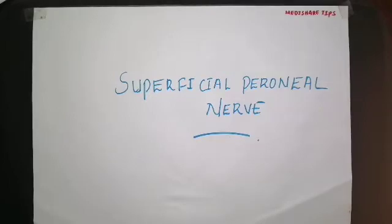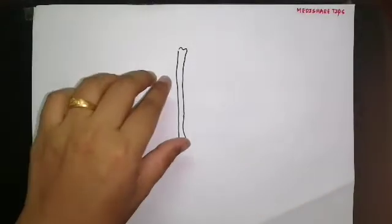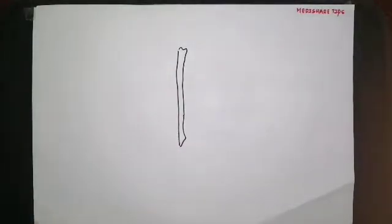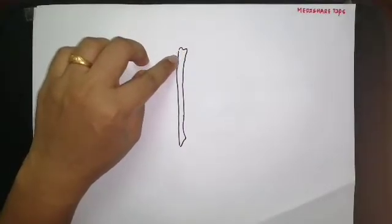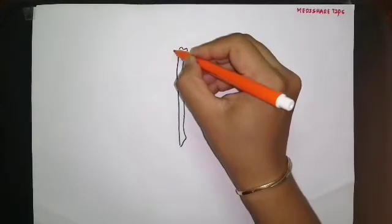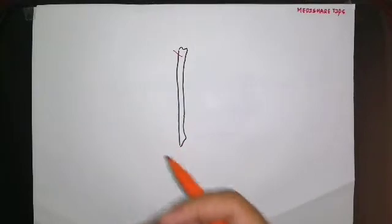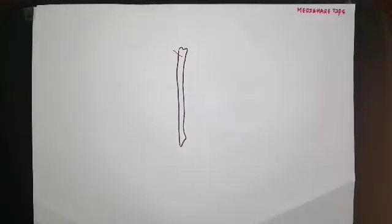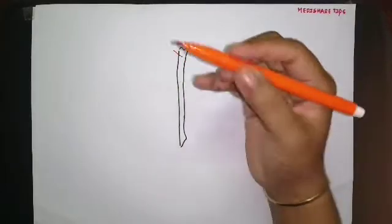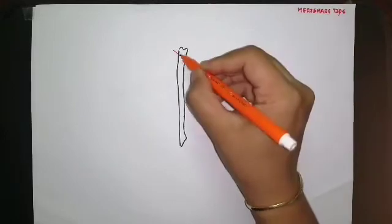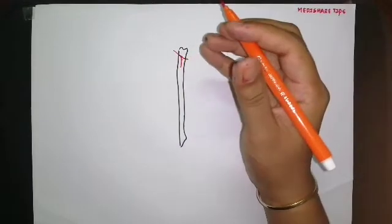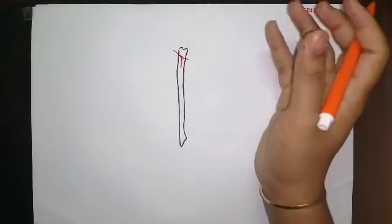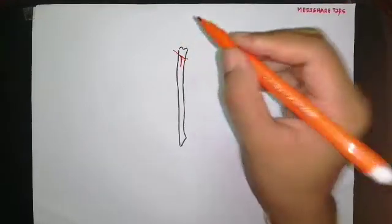In this video we are going to discuss about the superficial peroneal nerve. The common peroneal nerve passes across the lateral aspect of the neck of fibula, and deep within, under the cover of the peroneus longus muscle, it divides into two terminal branches: the superficial peroneal nerve and the deep peroneal nerve. The deep peroneal nerve passes into the anterior compartment.